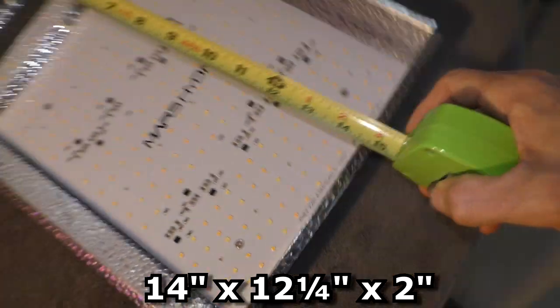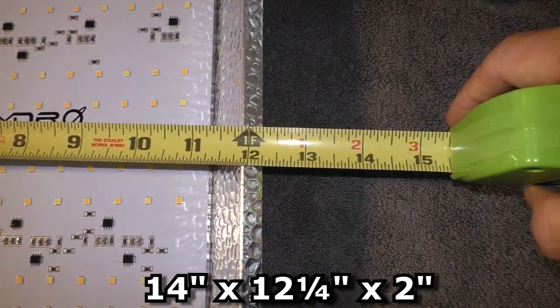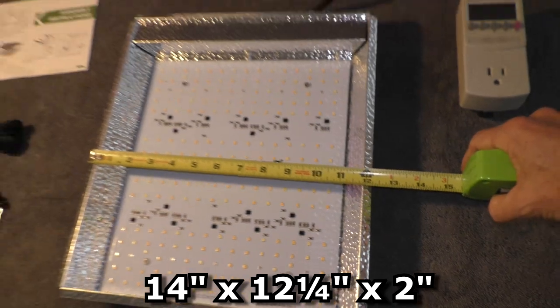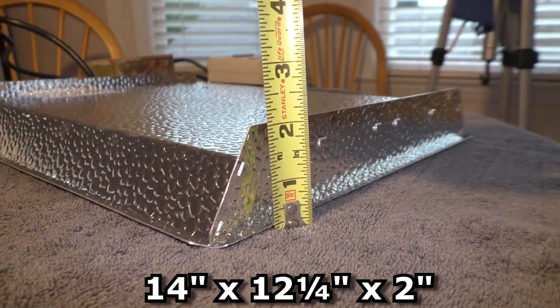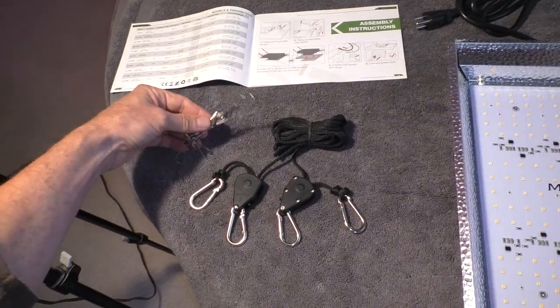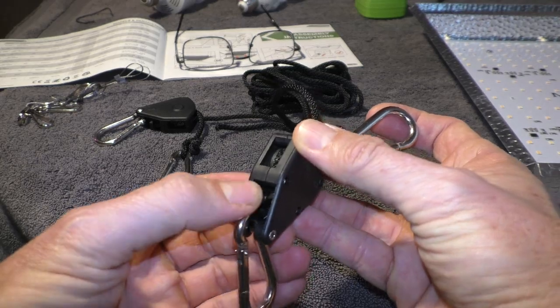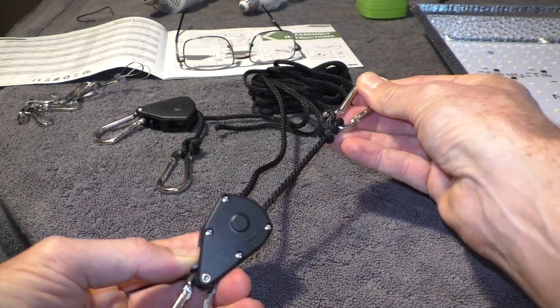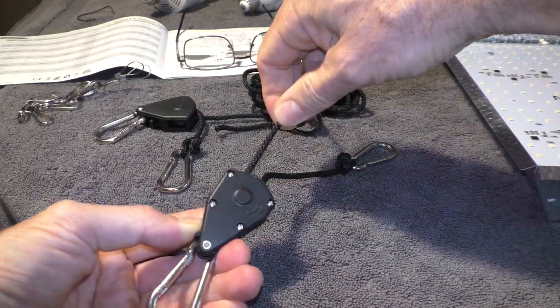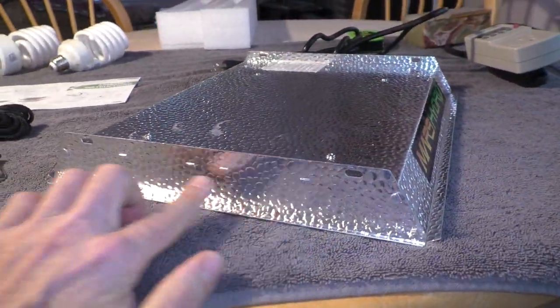The measurements are 14 inches this direction, 12 and a quarter this side, and height-wise it's about two inches. It comes with hanging hardware - there's a little locking cam mechanism so you can raise and lower the light that mounts onto these spots on the reflector.